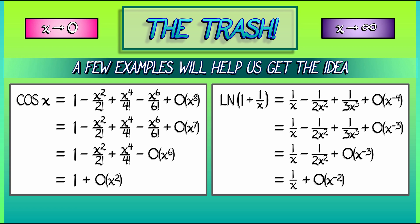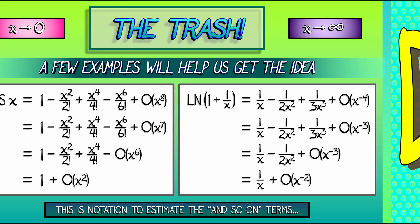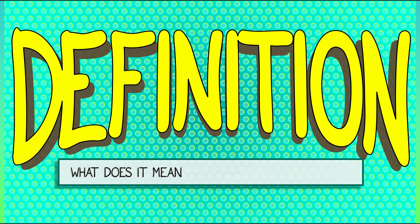These are a couple of examples of how big O works. It's just notation to help control the and so on and so on terms in a series in this example. Now, these are examples. It's not a definition. You need a formal definition of what it means to be big O of something. And here's what it is.